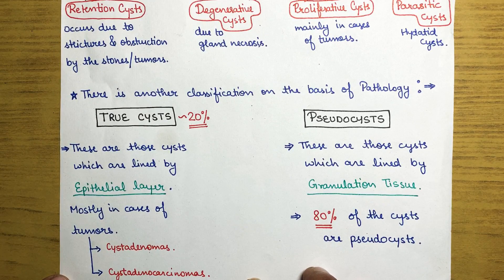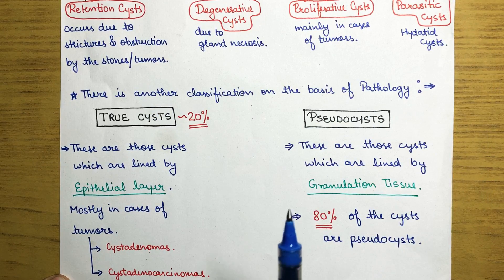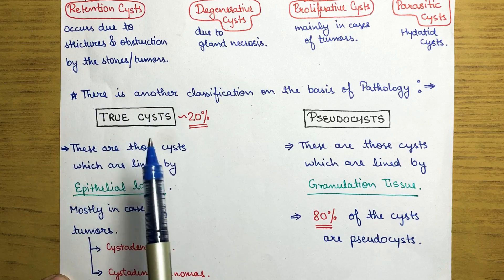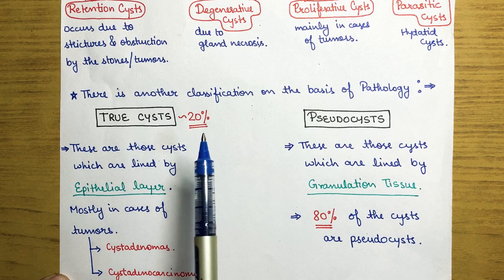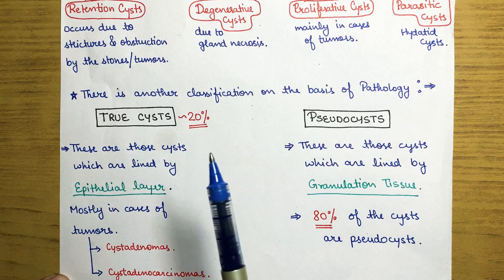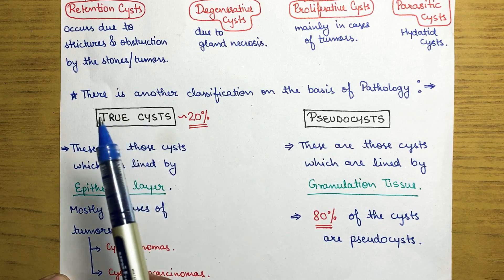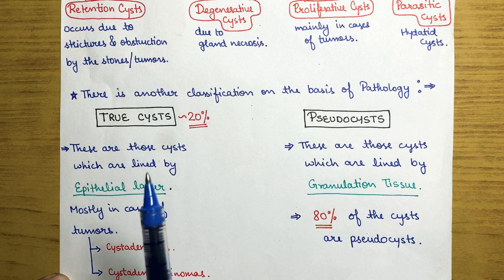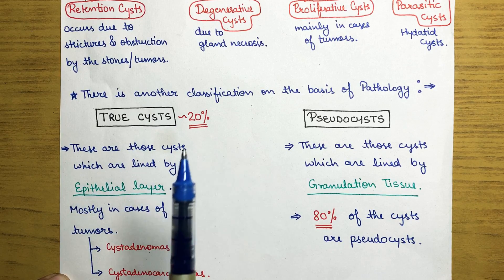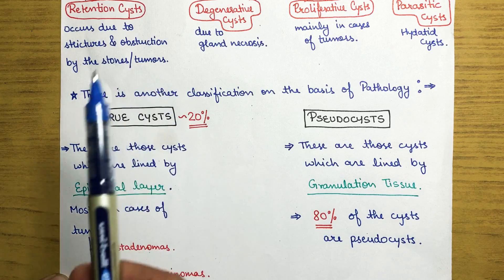The pathological classification divides cysts into true cysts and pseudo cysts. True cysts occur in about 20 percent of cases. These are cysts lined by an epithelial layer, and they mostly occur in cases of cystadenomas or cystadenocarcinomas.